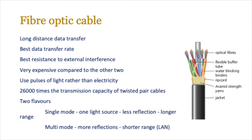The next cable is the fibre optic cable. This enables long distance data transfer and has some of the best data transfer rates, as well as the best resistance to external interference. However, it's very expensive compared to the other two. Fibre optic uses pulses of light rather than electricity. It has 26,000 times the transmission capacity of a twisted pair cable and normally comes in two flavours: single mode, where you have one light source, less reflection, and a longer range; and multi-mode, where you get more light sources, more reflections, and a shorter range.